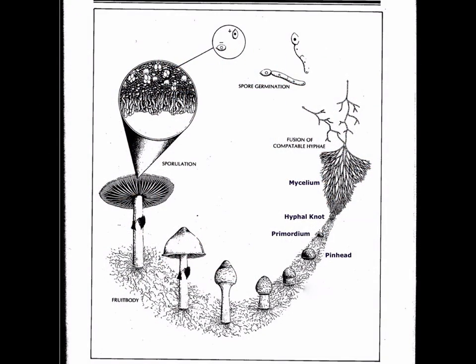This is a diagram of the basidiomycete life cycle. In the top center are spores, which germinate into hyphae. The hyphae will fuse together and form a large network called mycelium. This mycelium is the vegetative body of the organism, and its role is to absorb enough nutrients to allow it to produce a mushroom. When conditions are right, a small hyphae knot forms, developing into a primordium, then a pinhead, a button, and the various stages of the mushroom until it has fully developed gills producing billions of spores — at which point the life cycle is complete.